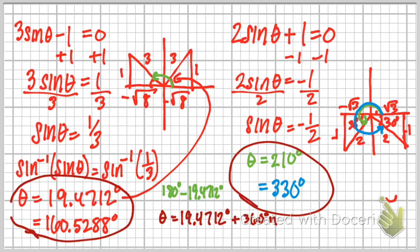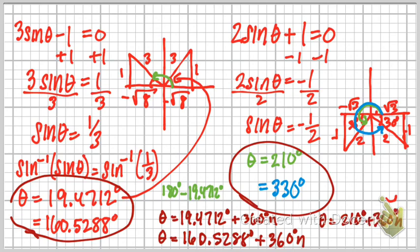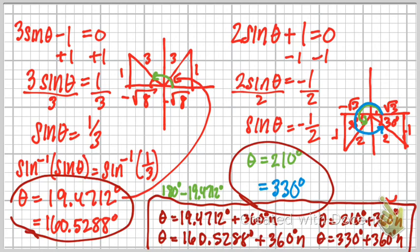So then the next one would be theta equals 160.5288 degrees plus 360 degrees n. That's simply saying that every 360 degrees is going to take me to the next one and the next one and the next one. I'd also have to do that for these others as well. So then I would also have theta equaling 210 degrees plus 360n and then theta equaling 330 degrees plus 360n. That would be all of the answers since they didn't put any parameters on the angles altogether like 0 to 360 or 0 to 2π.